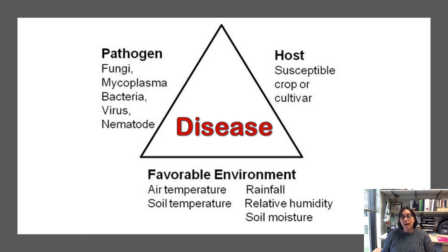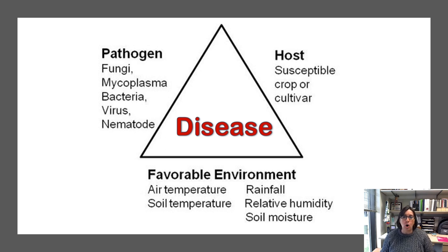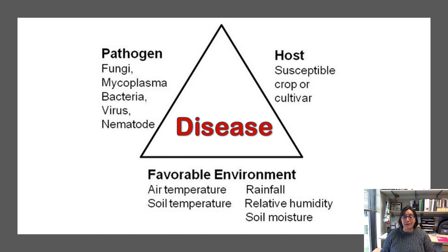On the right side we have the host. To break that side of the disease triangle, we would remove the host or remove the susceptible host tissue. There might be cultivar resistance — some hemp varieties are resistant or tolerant to certain pathogens. Sometimes it's plant age; sometimes it's the tissue type. If we can break that side of the disease triangle, we have eliminated or stopped disease from spreading.